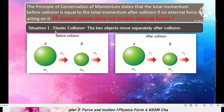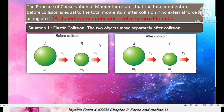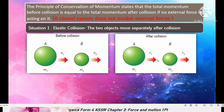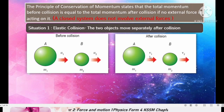Situation 1 is elastic collision, where two objects move separately after collision. Before collision, object A has mass m1 and initial velocity u1, and object B has mass m2 and initial velocity u2. After collision, the two objects move separately with their own final velocities: v1 for m1 and v2 for m2.